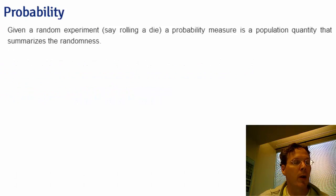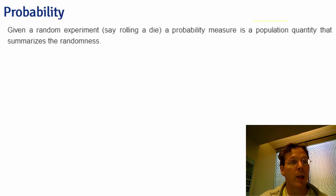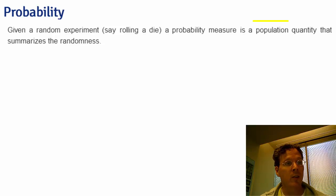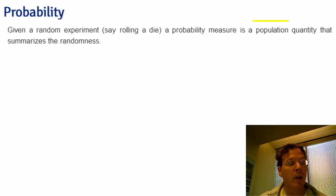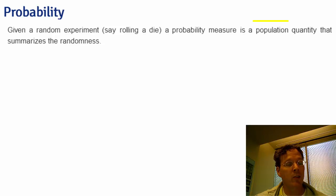Let's talk about probability. Given a random experiment, say for example rolling a die, a probability measures a population quantity that summarizes the randomness. I want to emphasize the word "population" here. In the die roll context, we think of it as an intrinsic property of the die, not as something that is a function of a simple set of fixed rolls. So when we talk about probability, we're not talking about something that is in the data that we have, but as a conceptual thing that exists in the population that we would like to estimate.